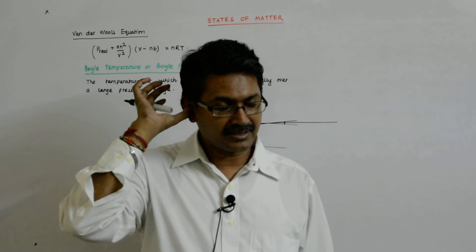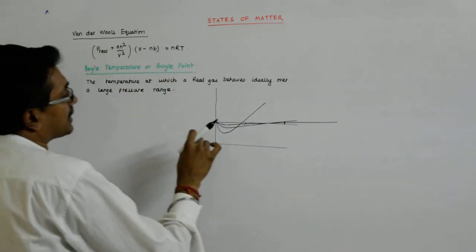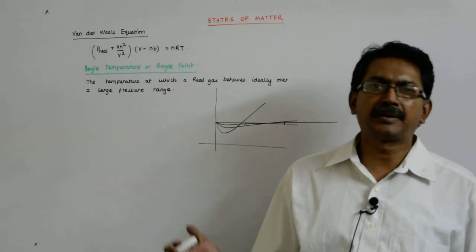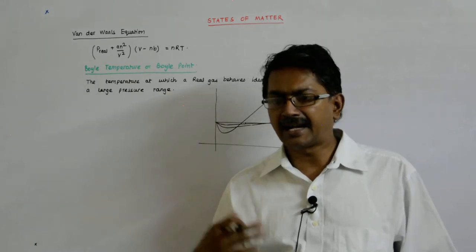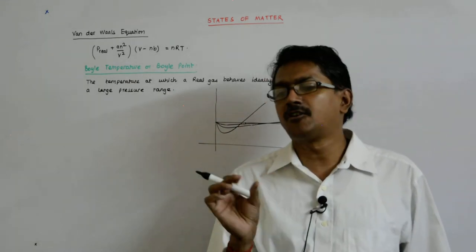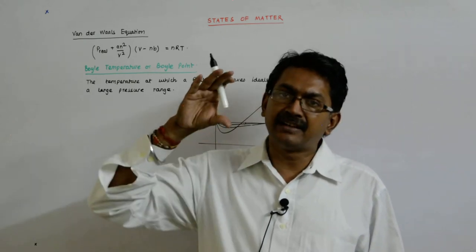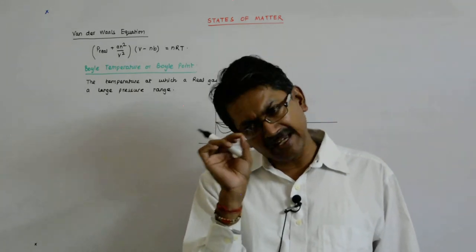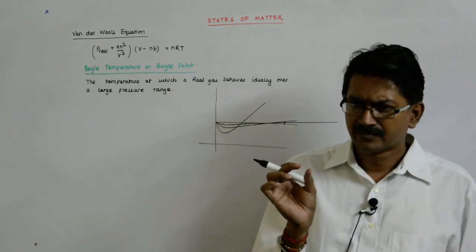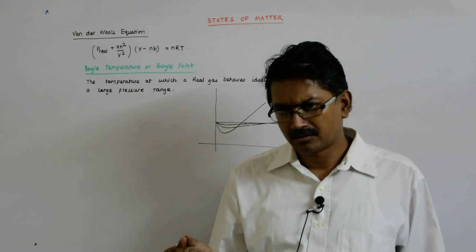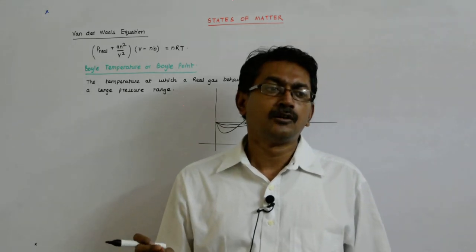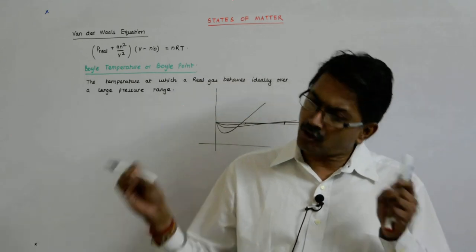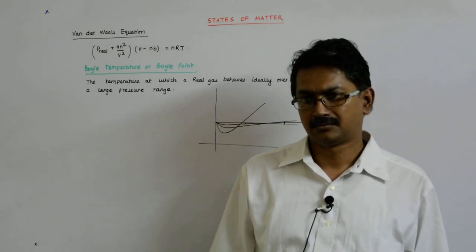That's what is happening. When you increase the temperature, the gas starts behaving ideally even when it is compressed to small volumes, due to the kinetic energy gained. But in what range of pressure will it be able to do that? Maybe at a very highly compressed volume state, at a very high pressure, it will behave ideally but for a very small range of pressure. We want that temperature for which a large range of pressure variation ensures an ideal behavior. You're not getting it.